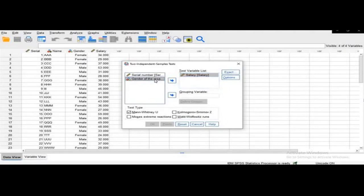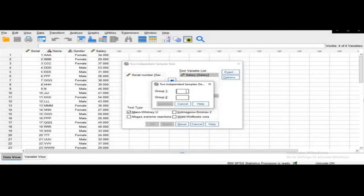In the Test Variable List select Salary because we have to test for salary. And Gender is our grouping variable because there are two groups in gender: zero is for male and one is for female. So group one is zero and group two is one, and then press Continue.